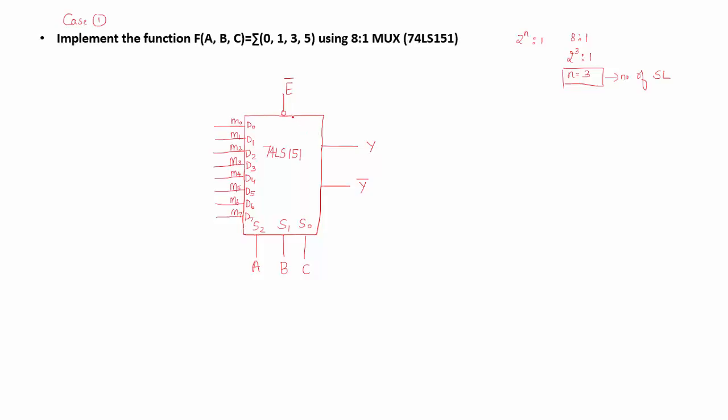Now the last step in solving the problem is I have to see what minterms are given to me in the problem. The minterms given to me in this problem are 0, 1, 3, and 5. I have to take all those data lines 0, 1, 3, and 5, connect them together and connect to plus 5 volts.